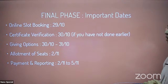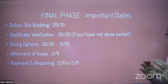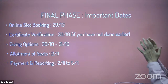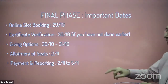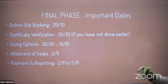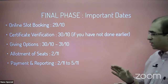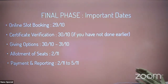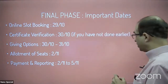Here are the important dates for Phase 2: Online slot booking for fresh certificate verification is on 29th October. Certificate verification can be done on 30th October. If you already participated in Phase 1, you can directly go to the final phase and give options between 30th and 31st October. Seat allotment will be done on 2nd November. Payment and reporting will be between 2nd November and 5th November.